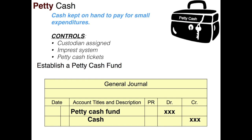Now that we've established the petty cash fund, we can start making purchases from it. Here we have a petty cash receipt bag that has $78 in cash, with tickets showing: delivery expense of $22, postage expense of $42, supplies expense of $42, and miscellaneous expenses of $16. The original balance was $200.